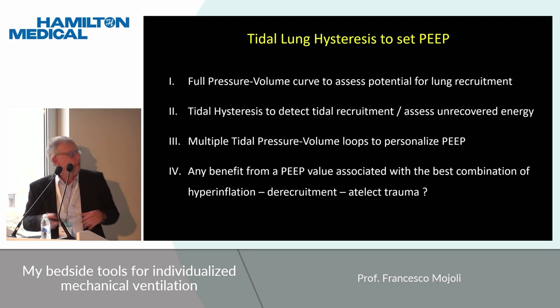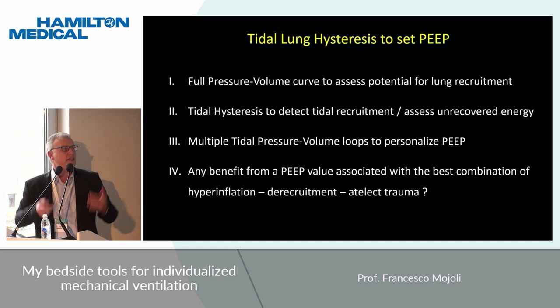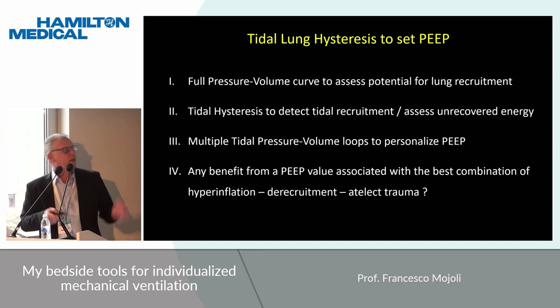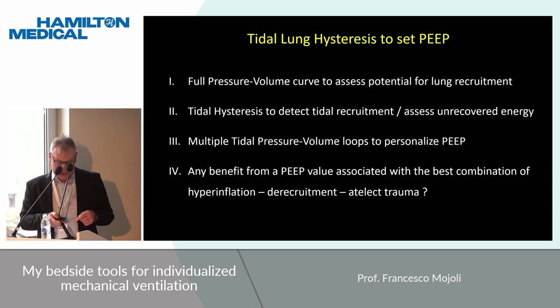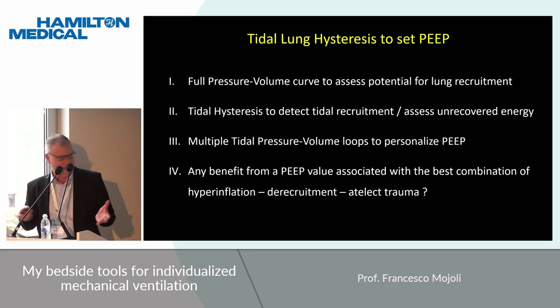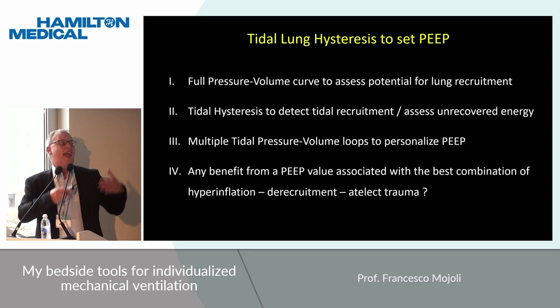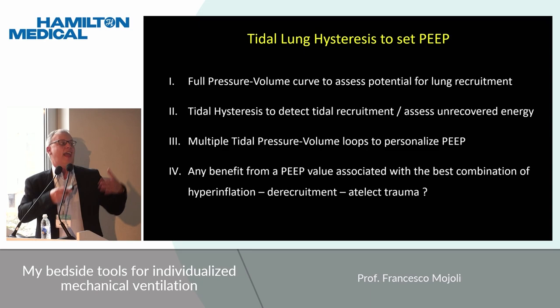To conclude, we have a single tool but can use it differently. The full pressure volume curve can be used to assess the potential for lung recruitment — this is very useful early after intubation. We describe the use of tidal pressure volume loops to measure tidal hysteresis to detect tidal recruitment and assess unrecovered energy. And the use of multiple tidal pressure volume loops in the context of a decremental PIP trial to personalize as much as possible PIP in our patient — whether our patient will appreciate a PIP setting achieving the best combination of hyperinflation, de-recruitment, and atelectrauma, we will probably know in the near future.